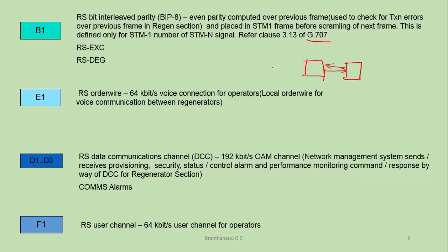There are lots of bit interleaved parity checks being done for regenerator section, multiplex section, and path overheads, so I will have a separate session on bit interleaved parity. If these bytes carry error information between transmitter and receiver and there are bit errors, the typical alarms which get raised are regenerator section excessive error and regenerator section degraded alarm. If bit errors are more at the receiver, it will communicate to the transmitter with these alarms stating that the receiver is getting bit errors.